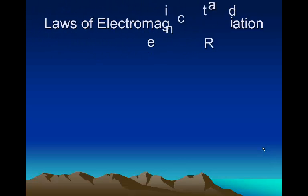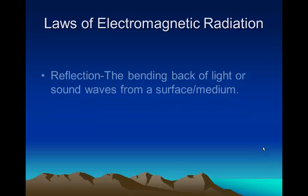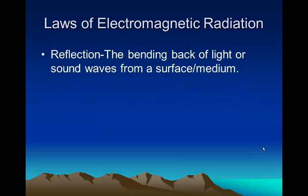The laws of electromagnetic radiation. Reflection, that's the bending back of light or sound waves from a surface medium. This is a characteristic of radiation that we need to know. When you put ultrasound on someone, it's not always going to be a perfect straight line. There's going to be some reflection and refraction from the tissues.